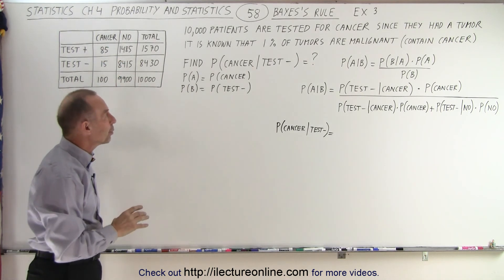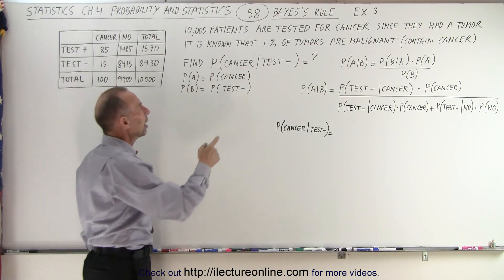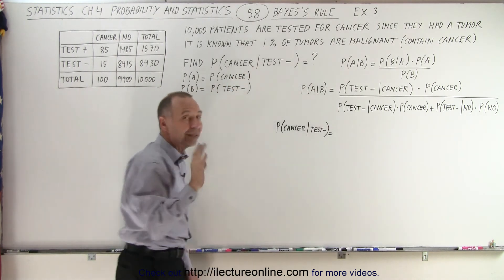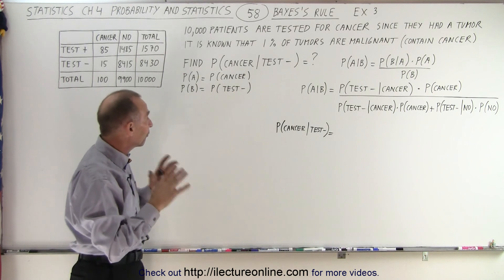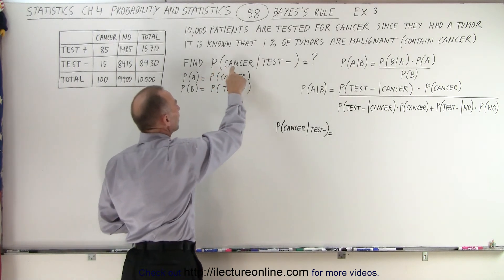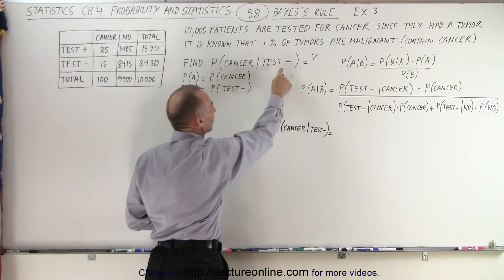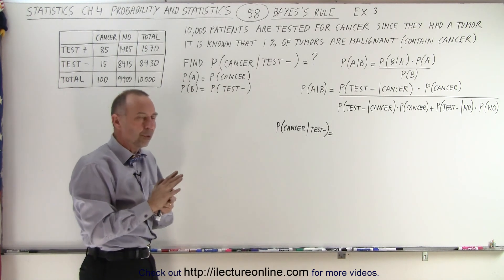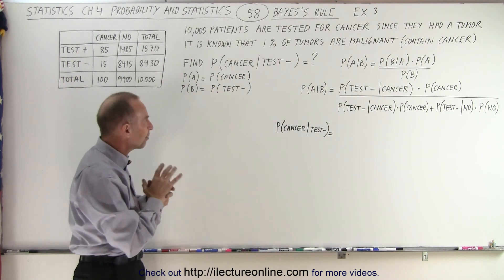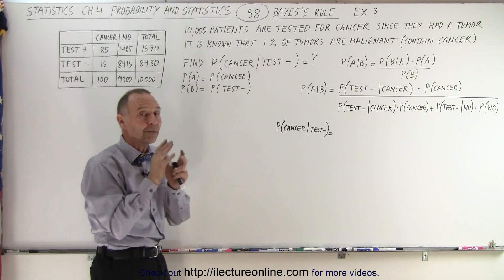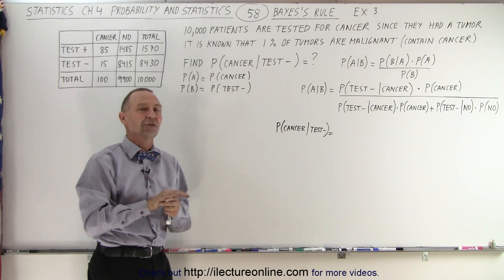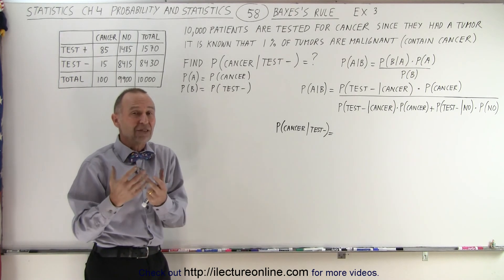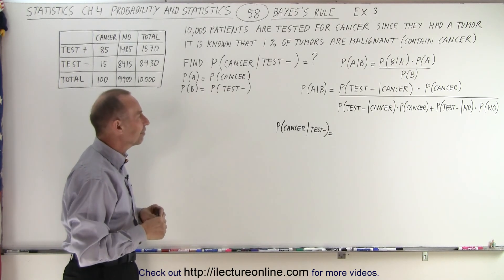In the previous video, we calculated the probability of a patient having cancer if the test was positive. In this video, we're going to figure out the probability that the patient has cancer if the test is negative, because we realize we're going to miss some. We had a 5.4% probability that if you tested positive, you had cancer. But what if you test negative? What is the probability that you have cancer even though you test negative?